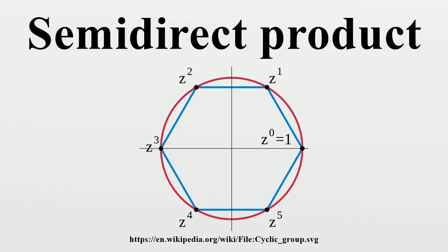In case the action should be made explicit, one also writes N ⋊_φ H. One way of thinking about the symbol is as a combination of the symbol for normal subgroup.